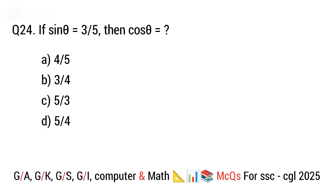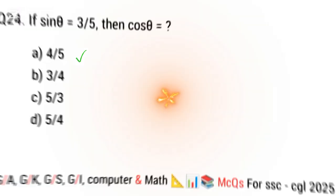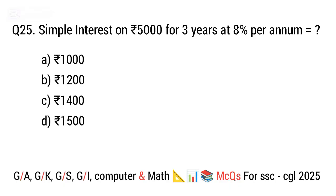Question 24. If sin θ is equal to 3 over 5, then cos θ is equal to? The right answer is option A. 4 over 5.